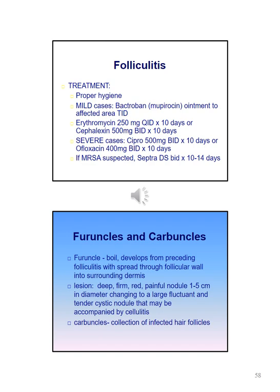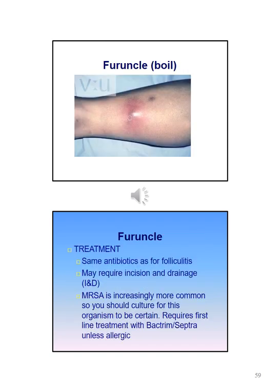A furuncle is a boil that develops from preceding folliculitis with spread through the follicular wall into the surrounding dermis. Lesions present as deep, firm, red, and painful nodules approximately one to five centimeters in diameter, changing to a large fluctuant tender cystic nodule that may be accompanied by cellulitis. Carbuncles are a collection of infected hair follicles. Treatment for a furuncle uses the same antibiotics as for folliculitis, but may require incision and drainage. If MRSA is suspected, it is recommended to culture for this organism.